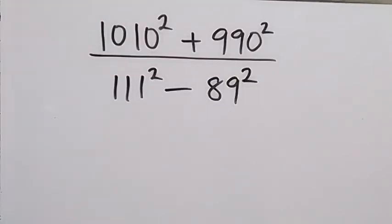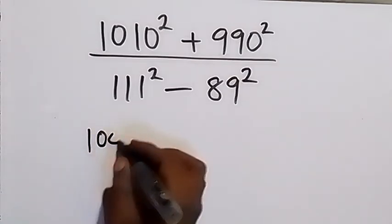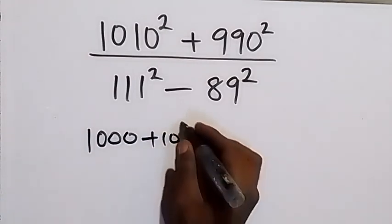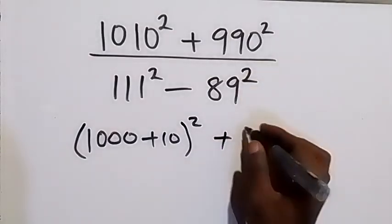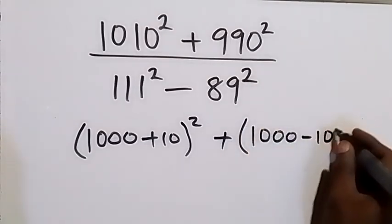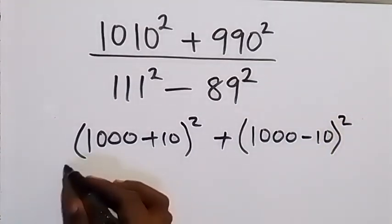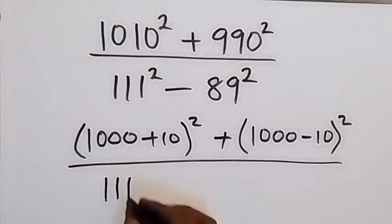Hello, you are welcome. We want to simplify this algebra problem. We can rewrite 1010 as 1000 plus 10, so we have (1000 + 10) squared, and 990 as 1000 minus 10, so we have (1000 - 10) squared. The denominator is a difference of two squares, which we can rewrite as (111 + 89) multiplied by (111 - 89).